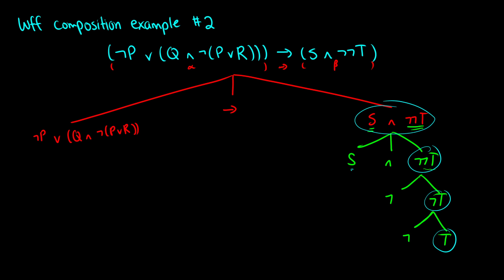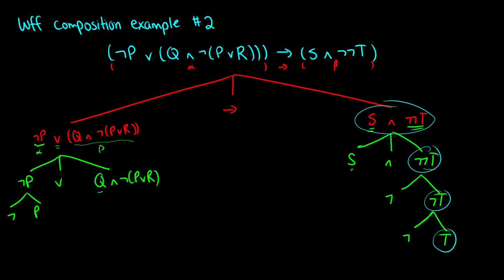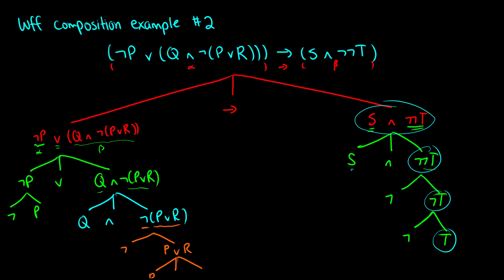On the left side we have (not-P or (Q and (not-P or R))). We have not-P as one WFF and (Q and (not-P or R)) as beta, joined by OR. Not-P is built from the negation and P. Then (Q and (not-P or R)) breaks into Q and (not-P or R) joined by AND. Next, (not-P or R) has a negation attached to the well-formed formula (P or R), so we split it into not and (P or R).